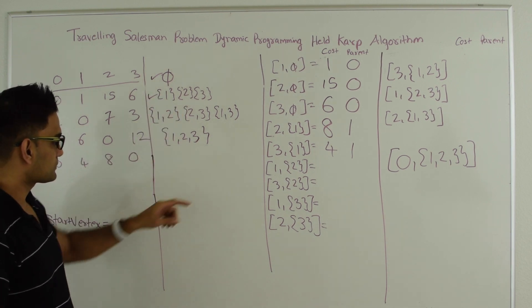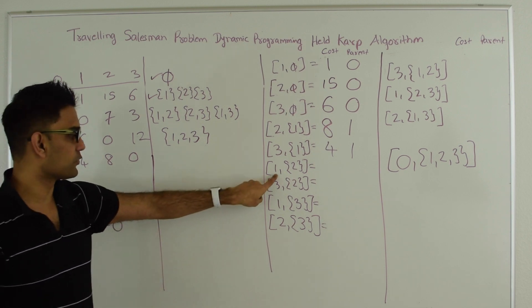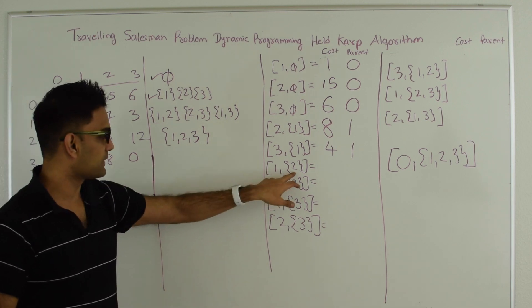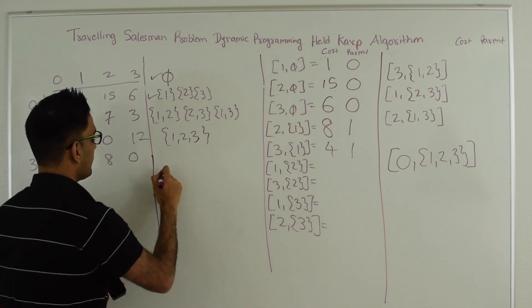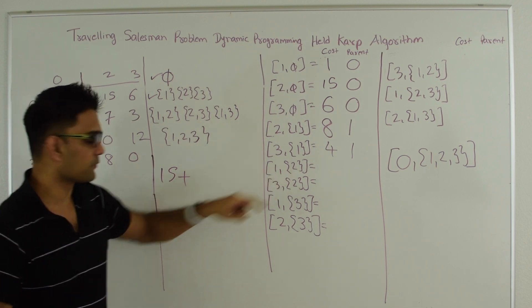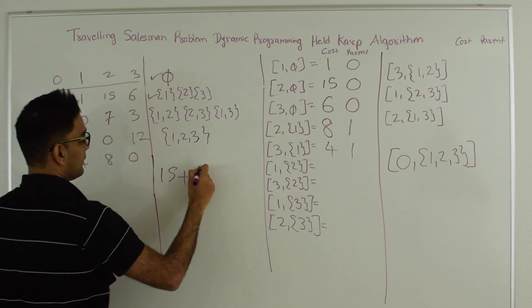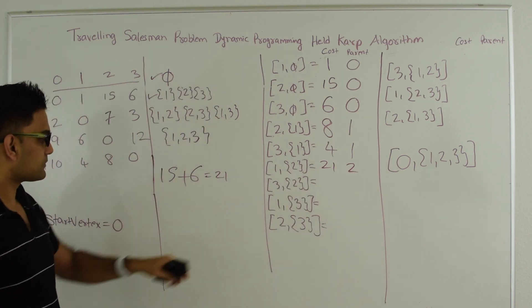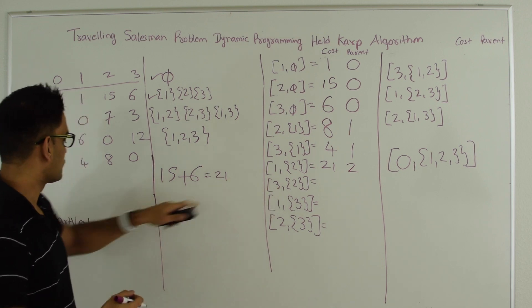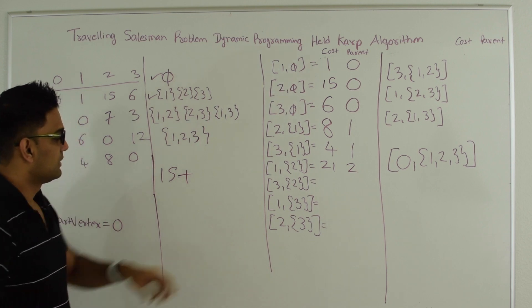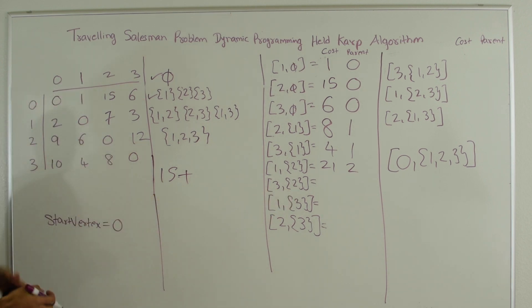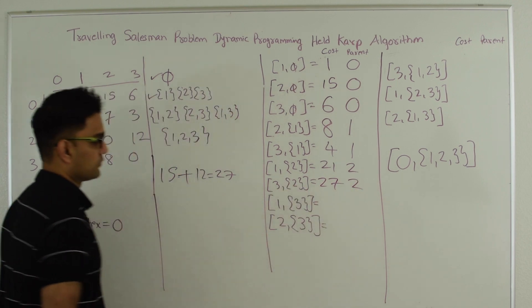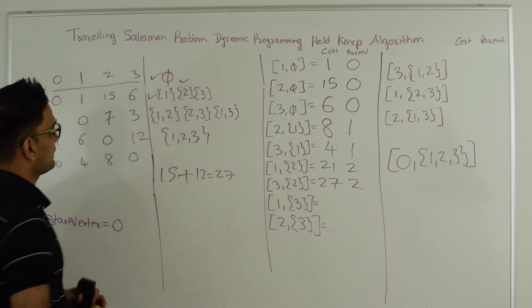Next we pick subset {2}. For vertex 1: cost to reach 2 from 0 (which is 15, from the empty set) plus distance 2 to 1 (which is 6) equals 21, with parent 2. For vertex 3 via subset {2}: cost to reach 2 from 0 is 15 plus distance 2 to 3 (which is 12) equals 27, with parent 2.